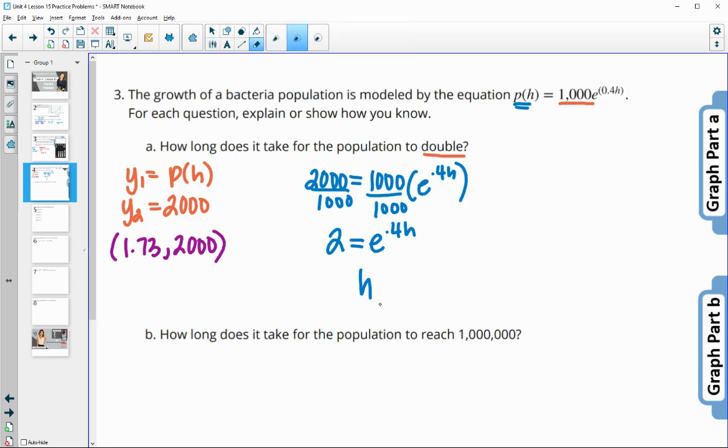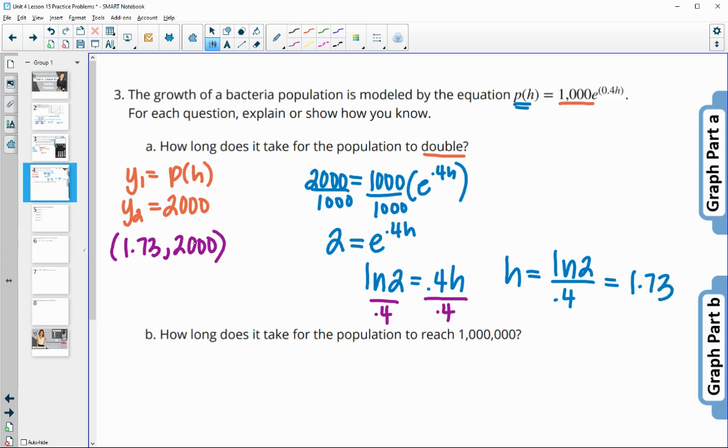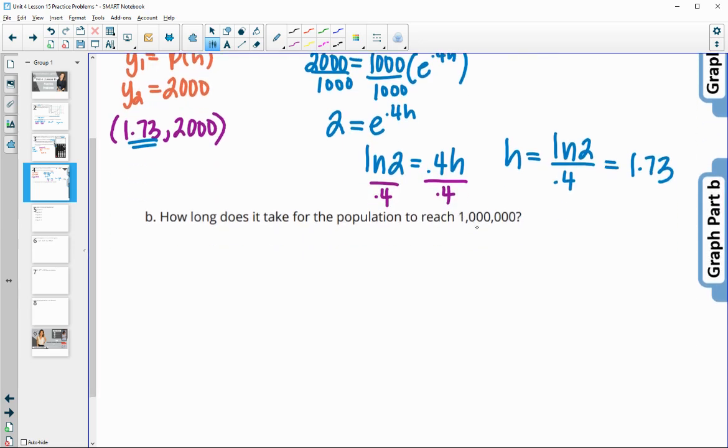So that's going to be the natural log function. So you can do the ln of 2 needs to equal 0.4H. And so then we just have to divide by this 0.4 to get H by itself. And so then this would give you kind of the exact hours. So ln of 2 divided by 0.4. And if you type that in your calculator, you again get that 1.73 hours that we got here. So again, both of those strategies are going to work.